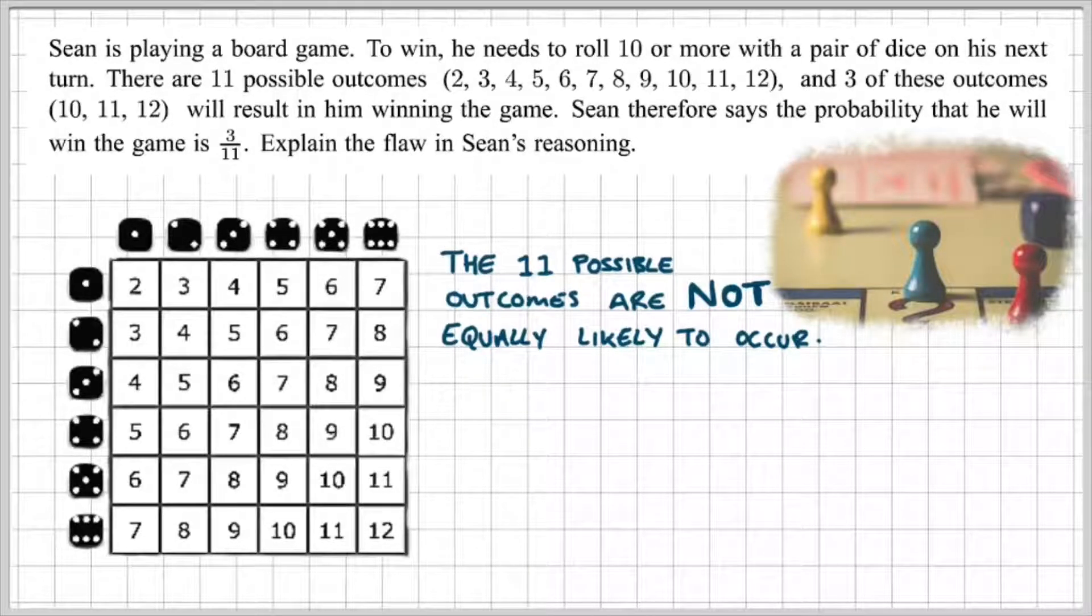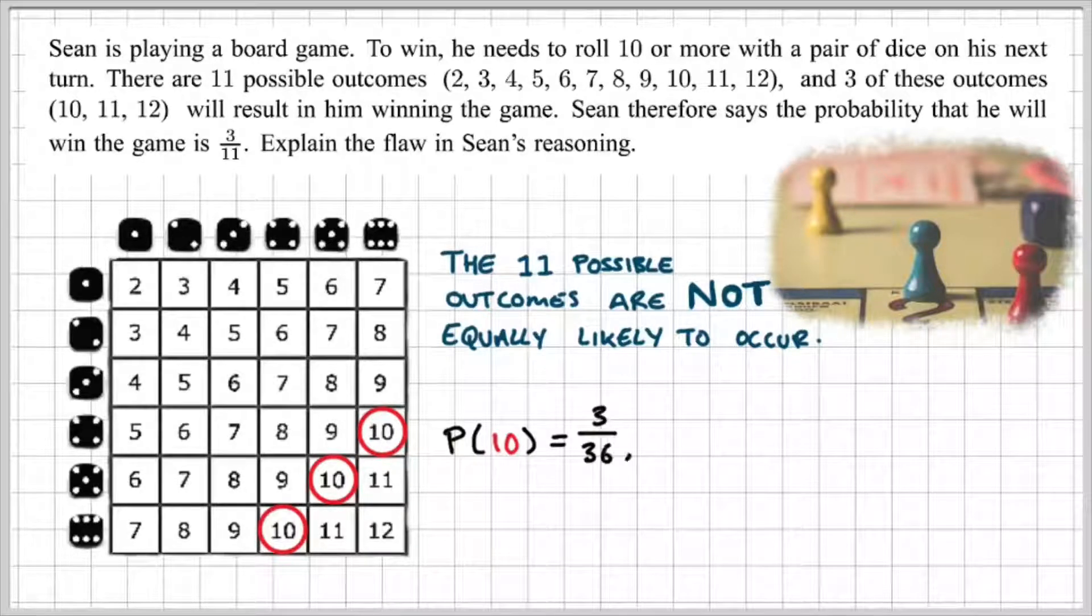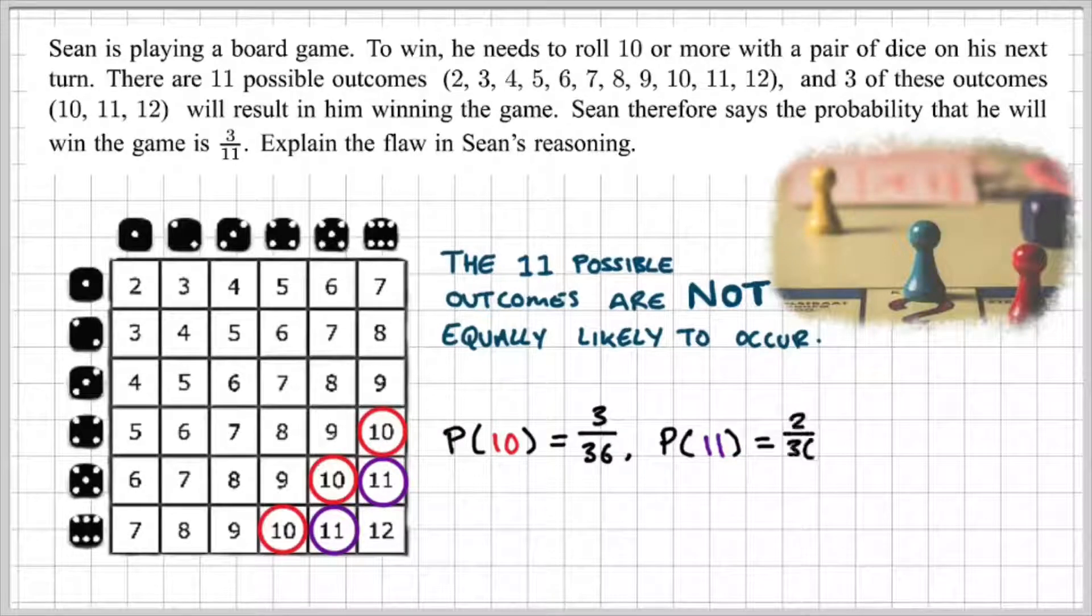Now, in Sean's case, in order for him to win, he needs to get 10 or above. So if we look at the probability of getting a 10, well, that's only 3 out of 36. And 11 would be 2 over 36. And getting a 12 is only 1 out of 36.